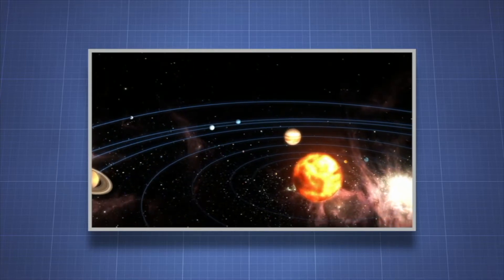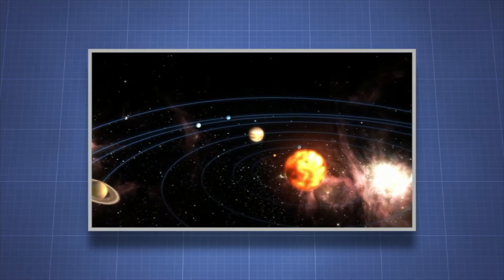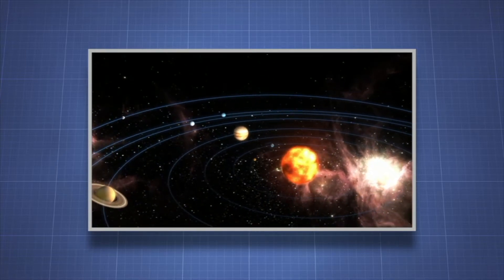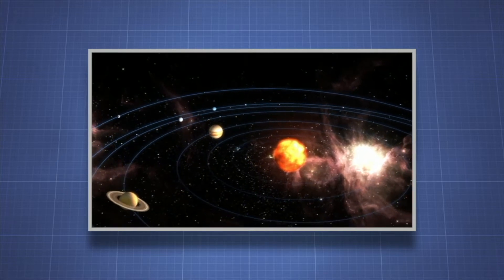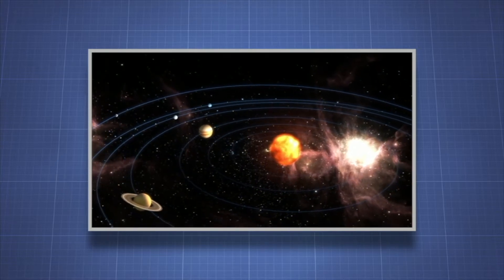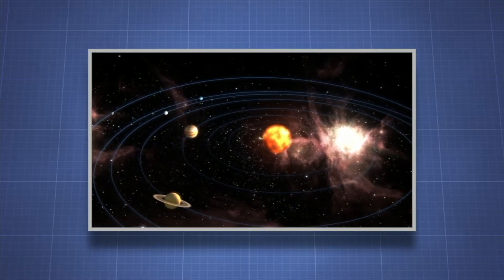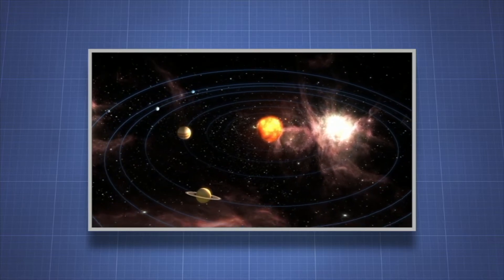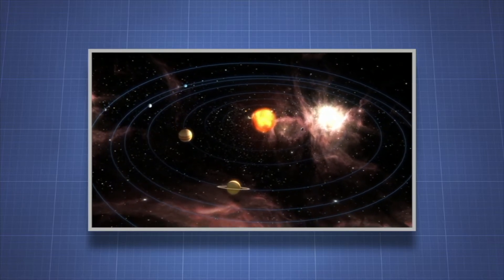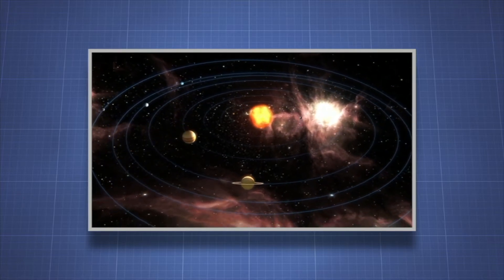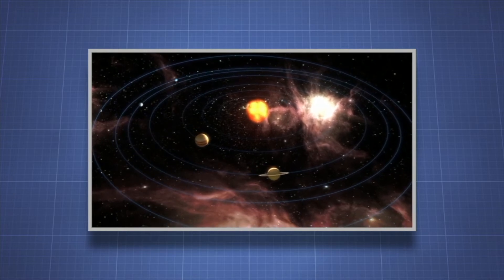The planets do not follow perfectly circular orbits as they circle the sun, partly because of the gravitational pull the planets exert on each other as they orbit the sun. This causes the planets to have non-uniform centripetal acceleration and tangential acceleration, so they follow elliptical orbits.